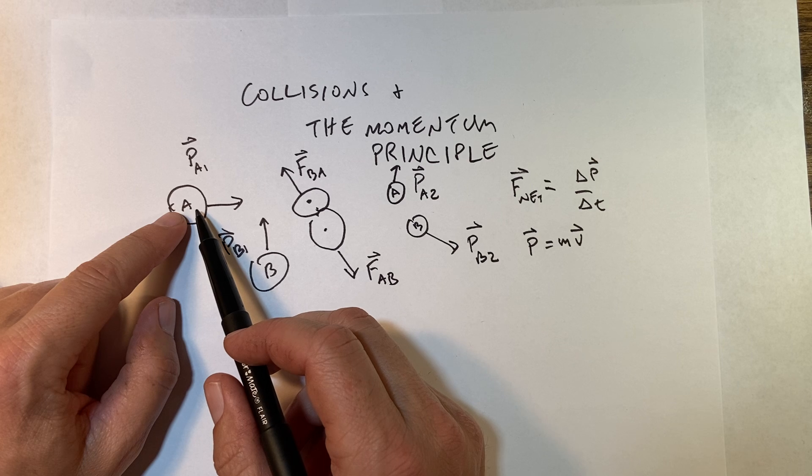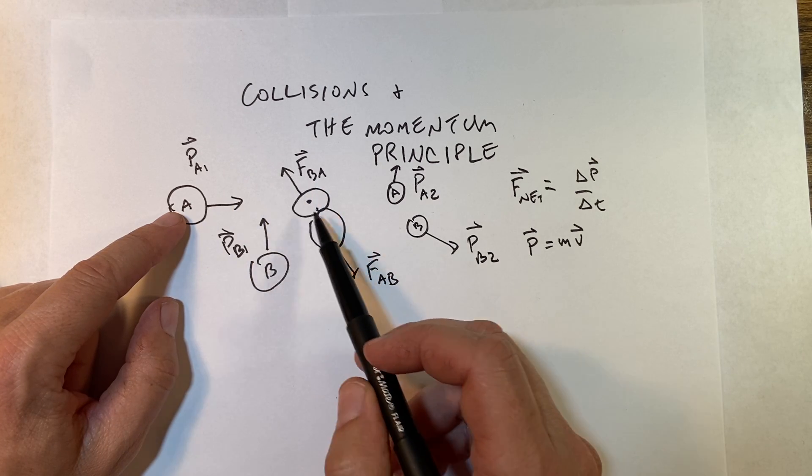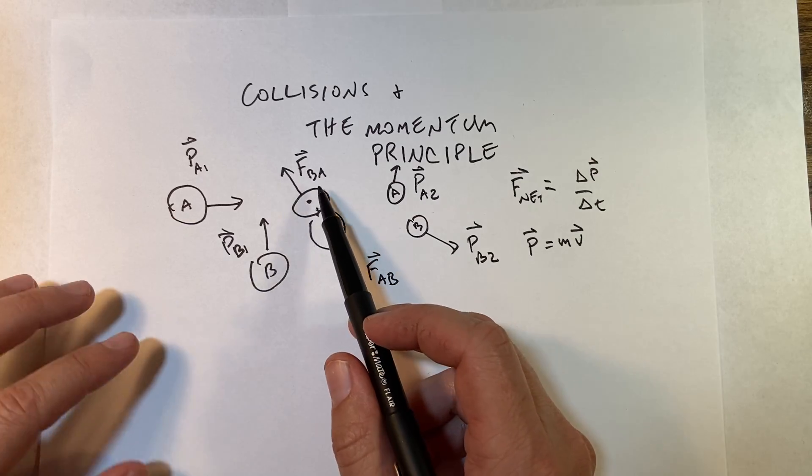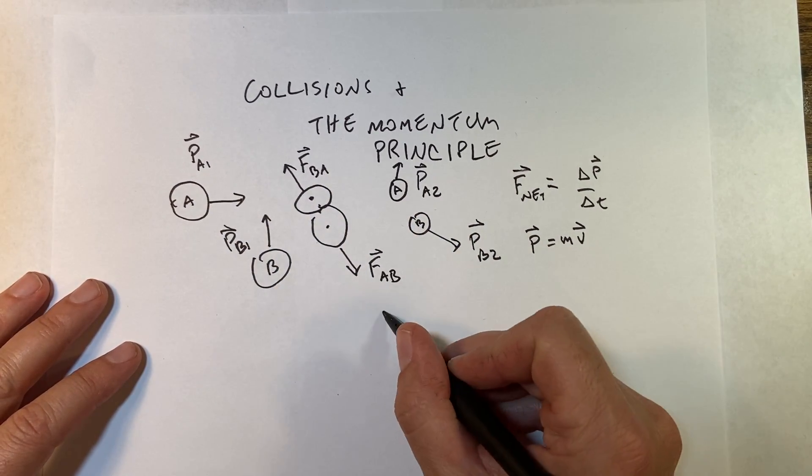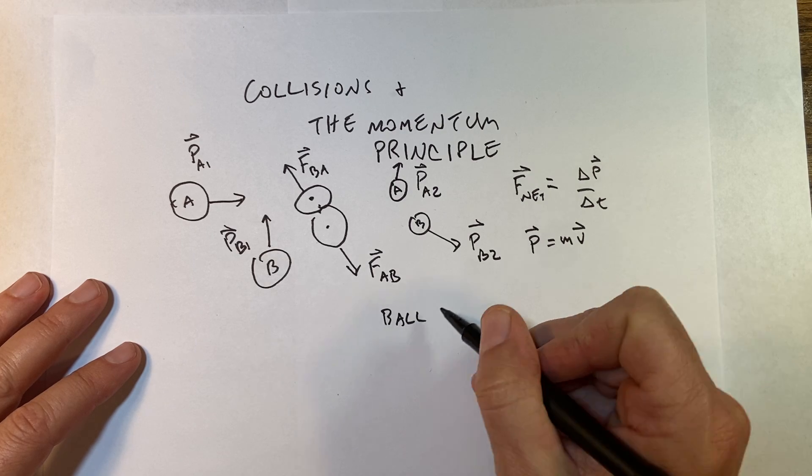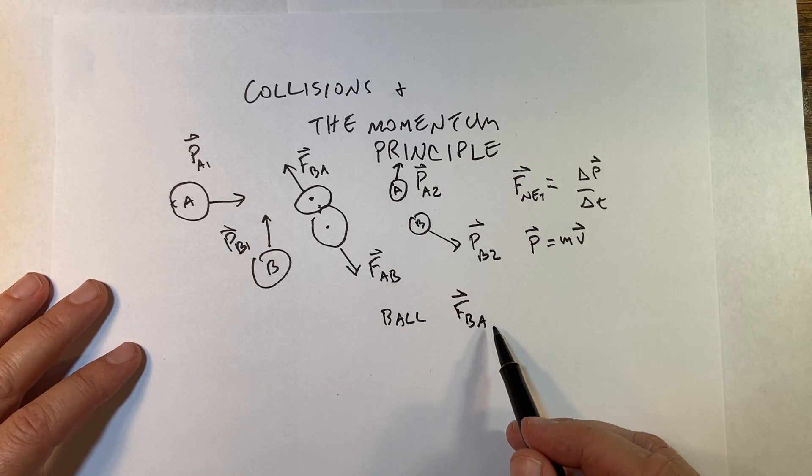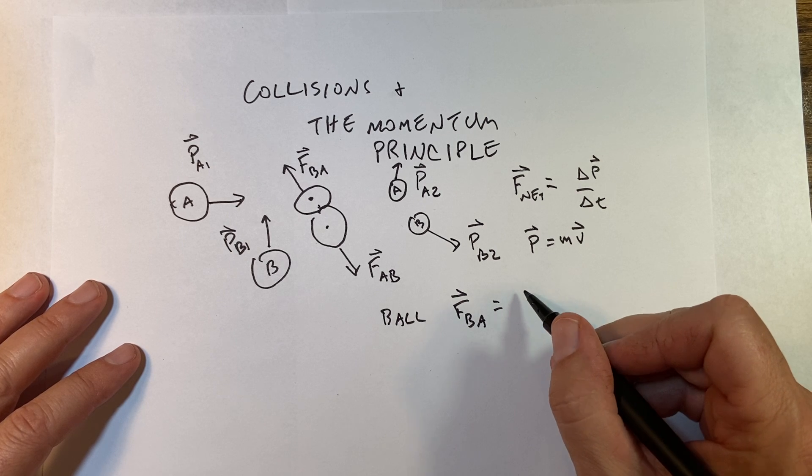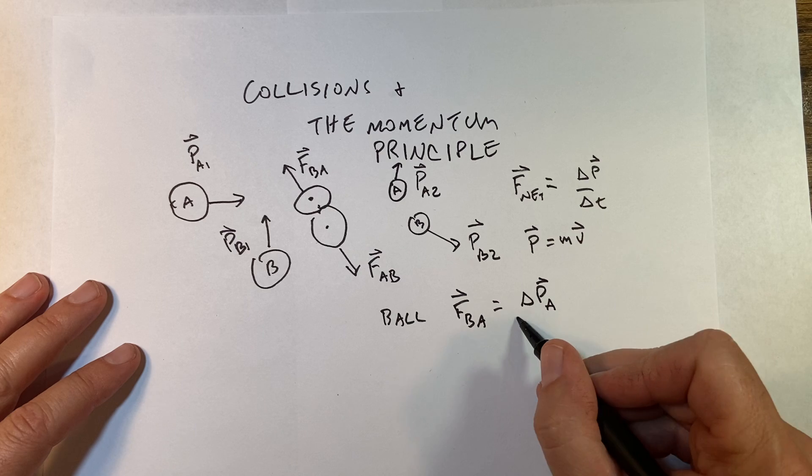Okay, so if I have ball A with momentum A1 and a net force on it, this force exerts on it for some time, and that's the only force, this is in space. Then I can write for ball A, I can write F_B on A is a change in momentum, so it's going to be delta p_A, that's a change of momentum for A.